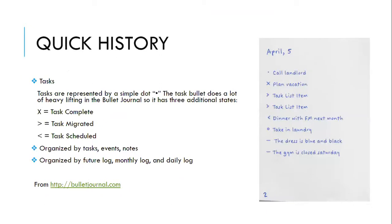Here is a quick history of how the analog bullet system works. A lot of things are organized by tasks. Tasks are noted with a dot or a bullet — for example, 'call landlord' has a bullet next to it. An X represents a task completed, so once you do that bulleted task, you cross it off. Task migrated means it is moving on to a day or a time in the future.